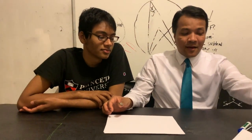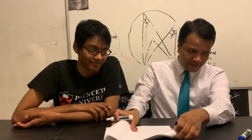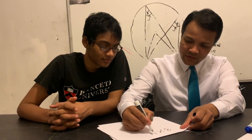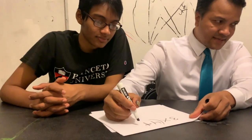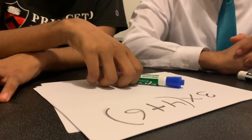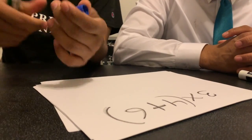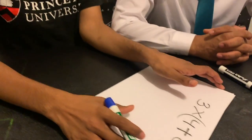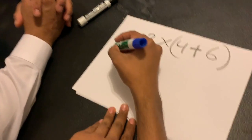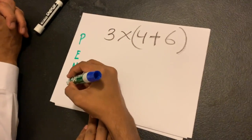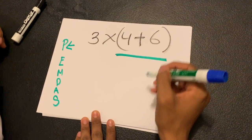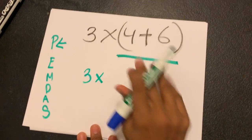Alright, let's put this idea into action and solve this problem: three times open-parenthesis four plus six close-parenthesis. Go ahead and use the distributive property. Okay, so I know I have to write down PEMDAS so I know what to do. First I do parentheses — four plus six is ten. So three times ten.